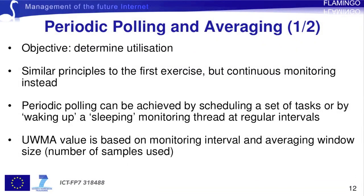The third and final exercise involves periodic polling and averaging, where the objective is to determine utilization of some network interfaces. The principles are similar to the first exercise, but instead of a single GET request, here we perform continuous monitoring. This can be achieved with a timer task or by having the monitoring thread put to sleep. In the example of the next slide, we will use the former. To do the averaging, we will be using the uniformly weighted moving average method, which is a popular approach for smoothing out monitored values by disregarding spikes in the data. The resulting average value is based on a monitoring interval and an averaging window size.